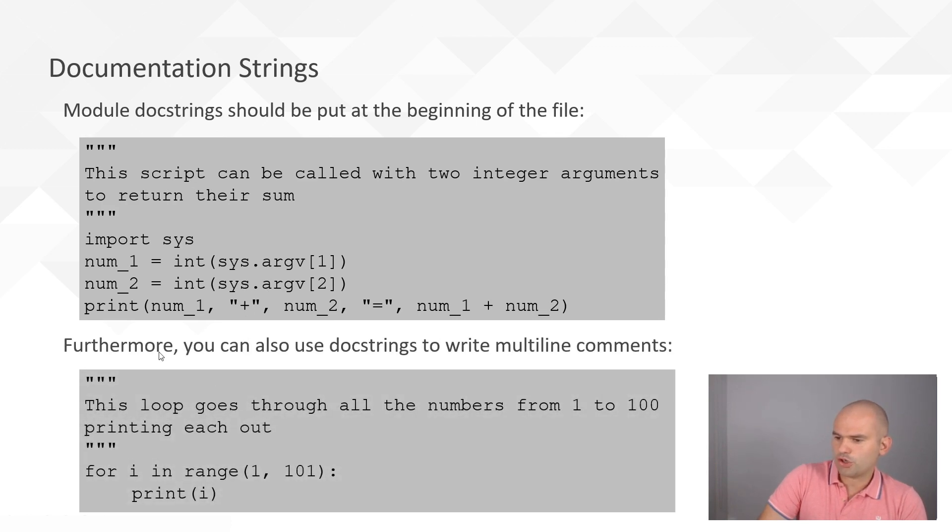You can use doc strings to write multi-line comments. Instead of hashtag comment, hashtag comment, hashtag comment, you can just do triple quotes on top and bottom. And just like here, write a longer doc string comment.